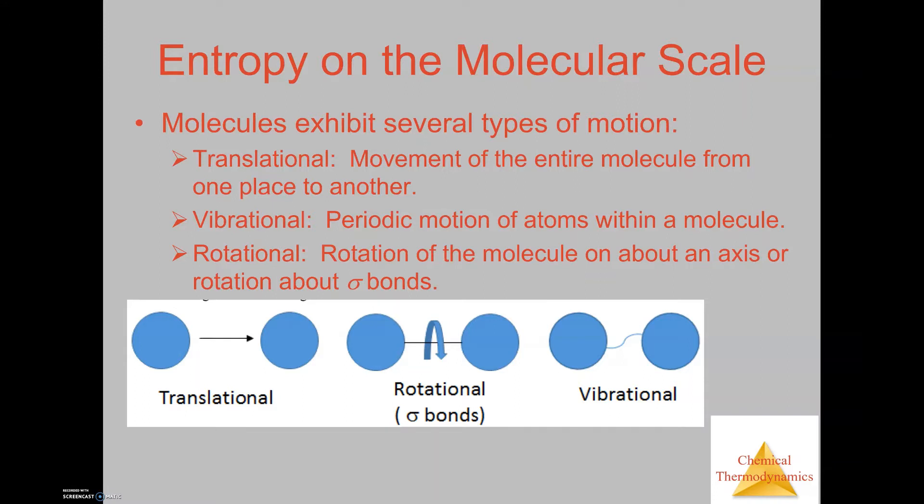Now rotational is how an atom is able to rotate around the bond, in this case the sigma bond. Sigma bonds are single bonds. All molecules have sigma bonds.